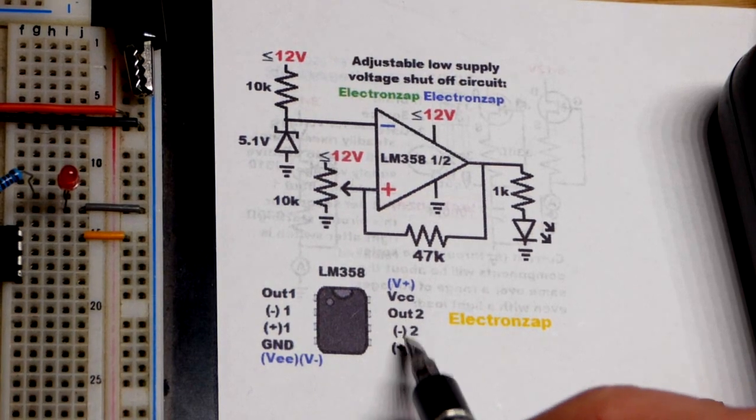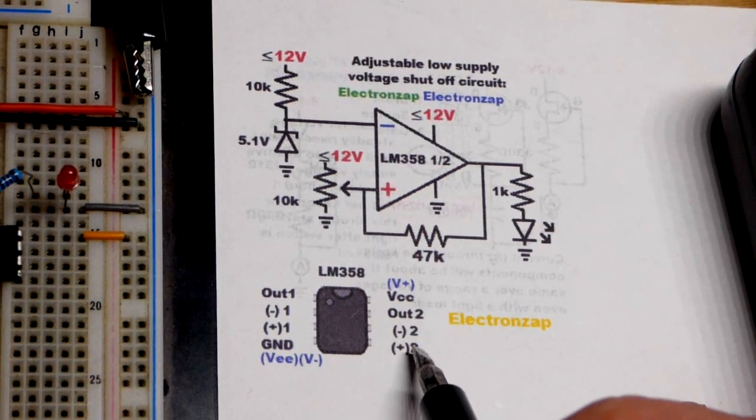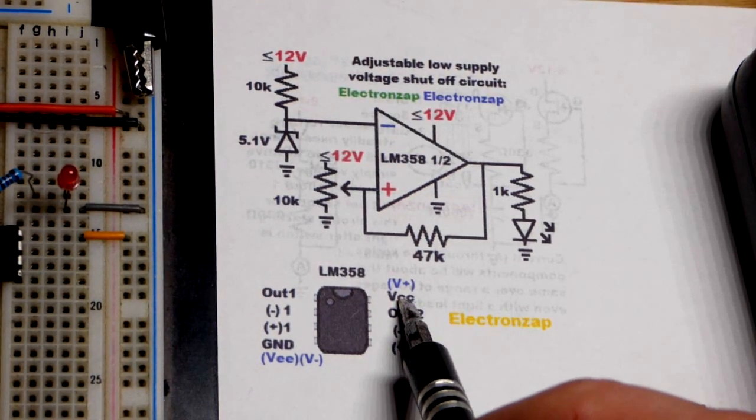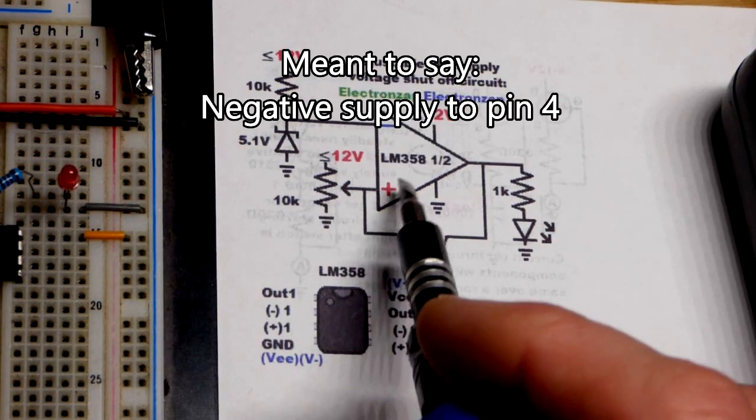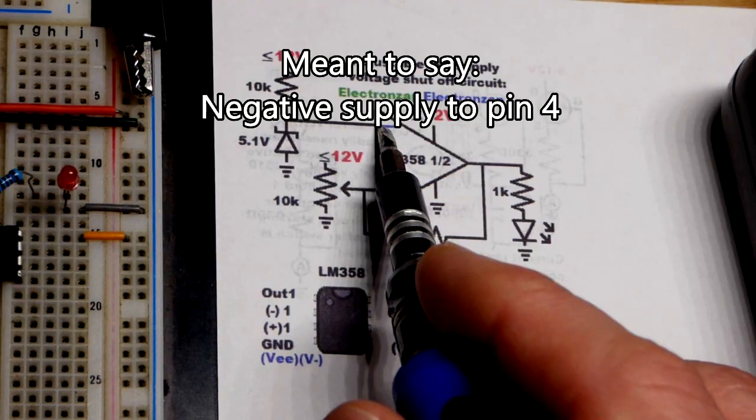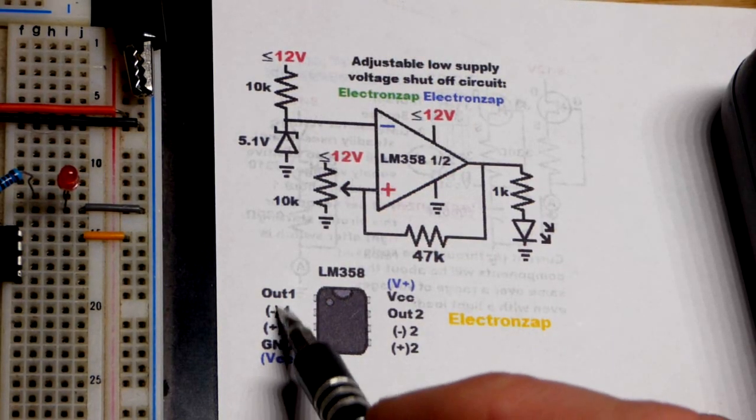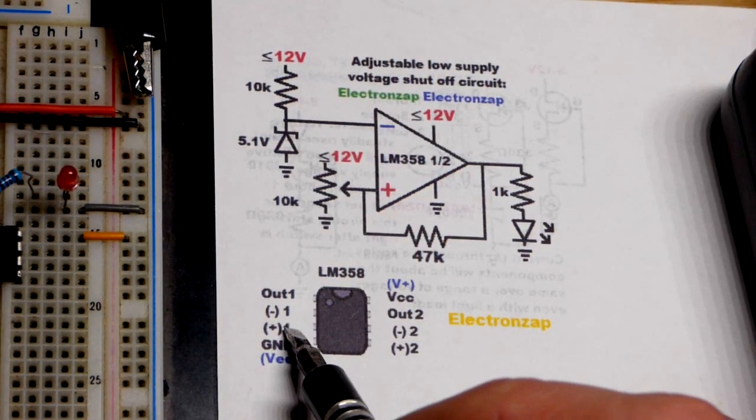The one that we're not using we should wire as a voltage follower outputting ground, but we're probably okay. So positive supply pin 8, negative supply to pin 1. You can see that we got the inverting input, the minus, above the non-inverting input. That's the way it is on the physical component.